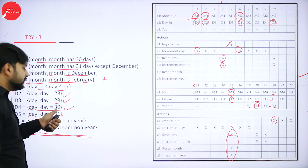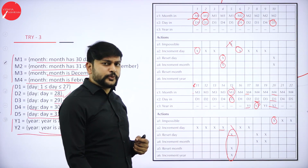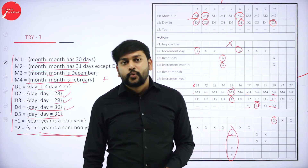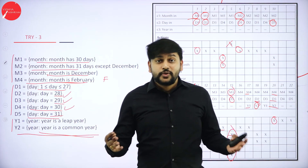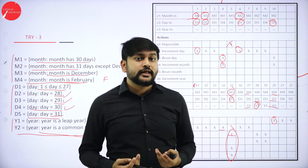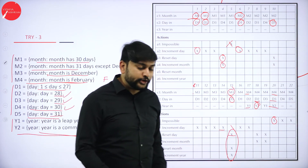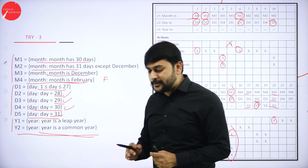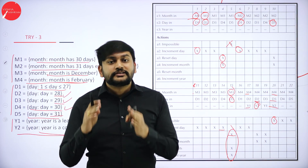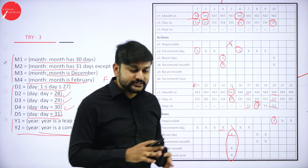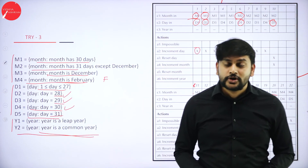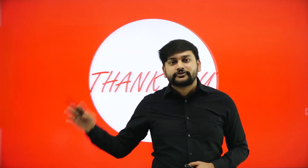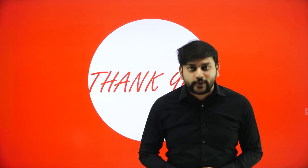For M4 and D4 (day 30): impossible — February never has 30 days. For M4 and D5 (day 31): also impossible — February never has 31 days. This is how we write the decision table for the next date problem. This concludes Try 3 and the complete decision table discussion. Thank you and have a nice day.